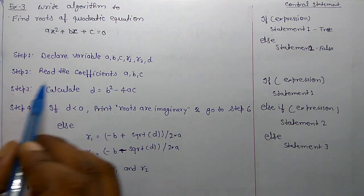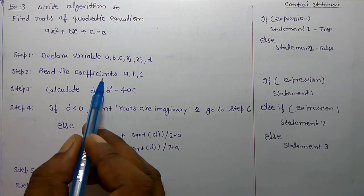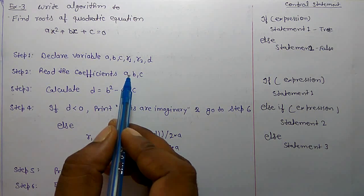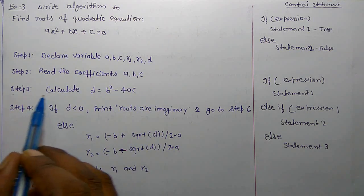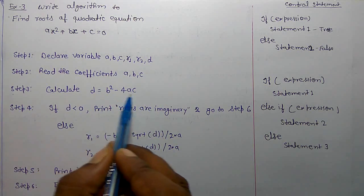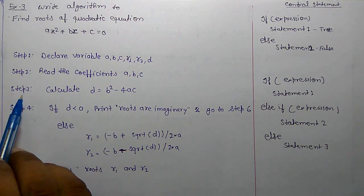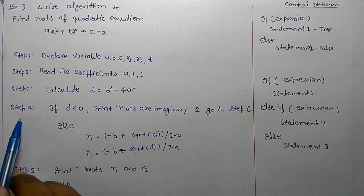Next step, read coefficients A, B, C. It means we need the value of A, B, C for calculating roots. Now calculate d equals b squared minus 4ac. This is next step.